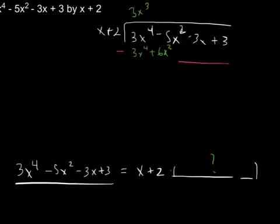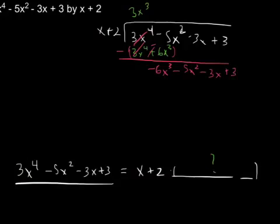So I subtract — and remember, I'm subtracting this whole thing. That means I subtract 3x to the 4th minus 3x to the 4th; those cancel. I have 0x cubed minus 6x cubed, so I end up with negative 6x cubed. Everything else doesn't interact in this first iteration, so I end up with negative 6x cubed minus 5x squared minus 3x plus 3. This is what I have to deal with after I've gotten my 3x cubed term out of the way.